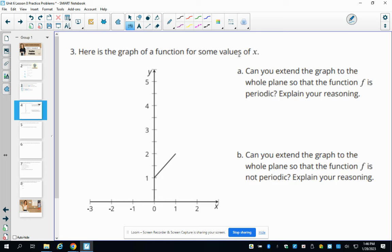Number three, here's the graph of a function. And we're showing the function for some X values. Could we extend this graph so that the whole plane of the function is periodic? Explain your reasoning. So could we make this a periodic function? Certainly, right? Like we could go down and then we could come back up and then we could go down. Over here, it could go up and then back down. And so it could just be repeating this pattern. So we certainly could make it periodic. So up and down as shown. And then just say that it's going to continue extending in that pattern.